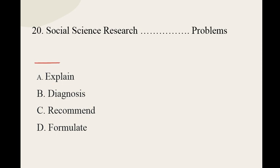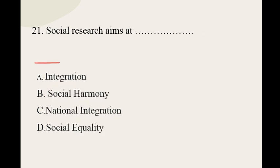Question number twenty: Social science research does what to a problem? The options are explain, diagnose, recommend, and formulate. The correct option for question number twenty is diagnosis. Question number twenty-one: Social research aims at what? Options are integration, social harmony, national integration, and social equality. The correct option for question number twenty-one is integration.